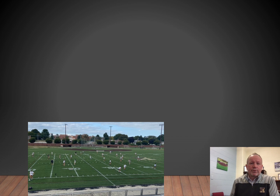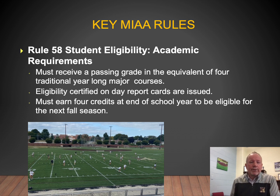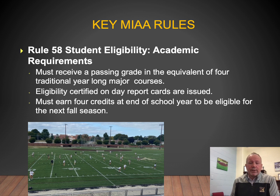Haverhill is part of the Massachusetts Interscholastic Athletic Association, or the MIAA. We must adhere to all MIAA rules and regulations at all times. The MIAA handbook is about 125 pages long, so we'll just review some key rules here. First, student eligibility and academic requirements: students must receive a passing grade in four subjects at the end of each marking period. Eligibility is certified on the day report cards are issued, and students must earn four full credits at the end of the school year to be eligible for the fall season the following year. Academically ineligible students may practice at the coach's discretion but may not participate in any competition.